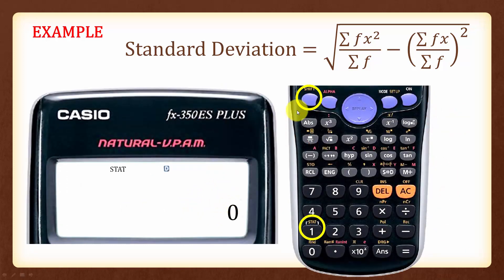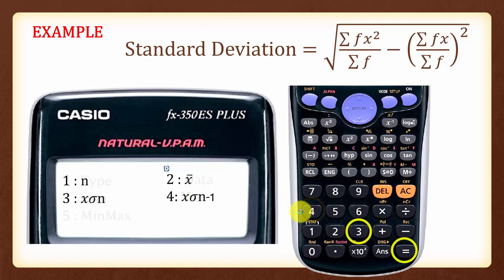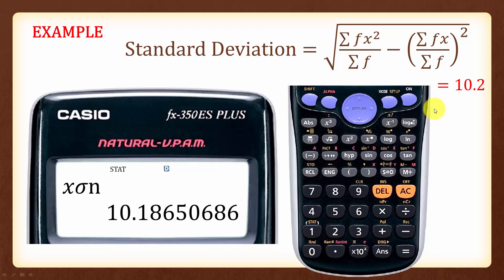You can also use the calculator to double-check the answer for standard deviation by pressing Shift 1 again and selecting 4. The symbol for standard deviation is shown, and pressing 3 followed by equal confirms that the standard deviation is 10.2 marks as well.